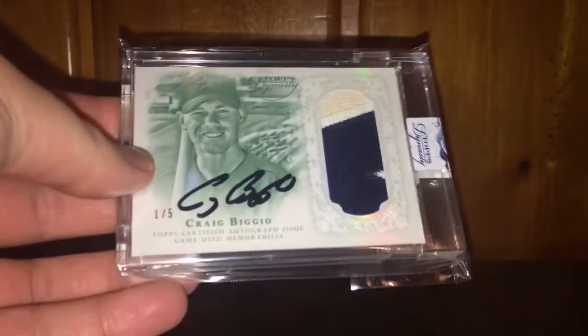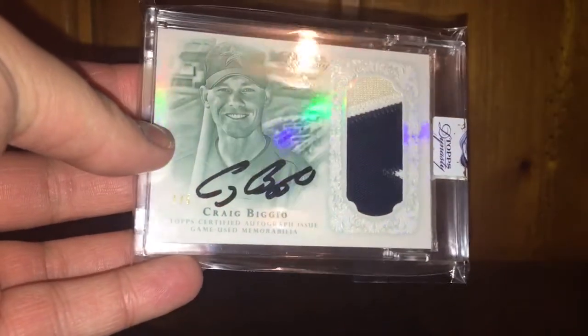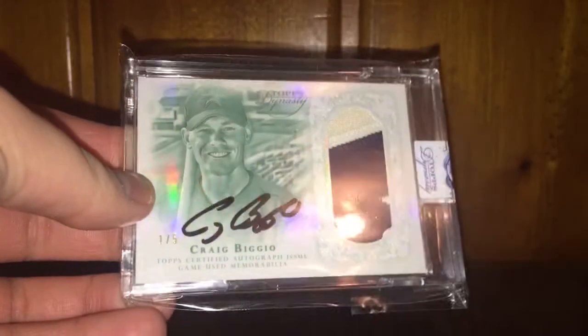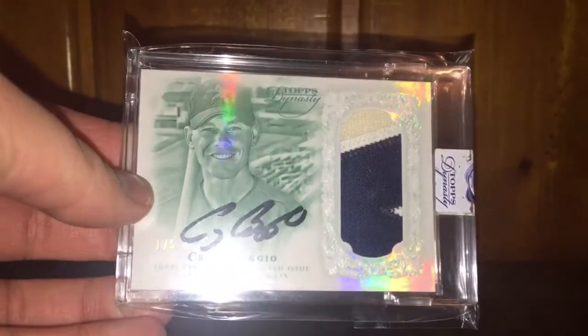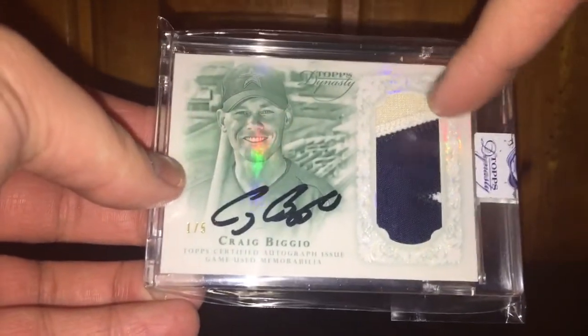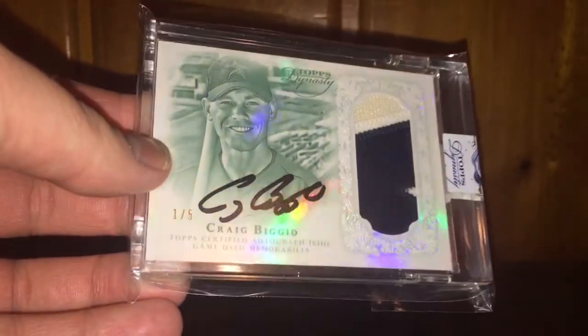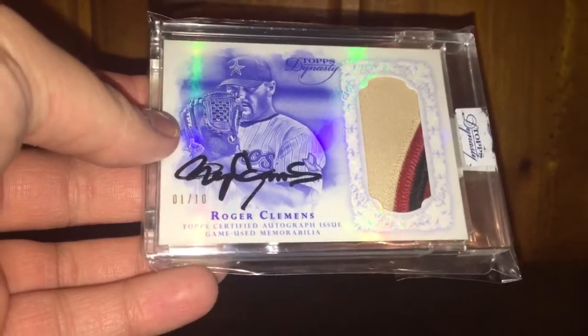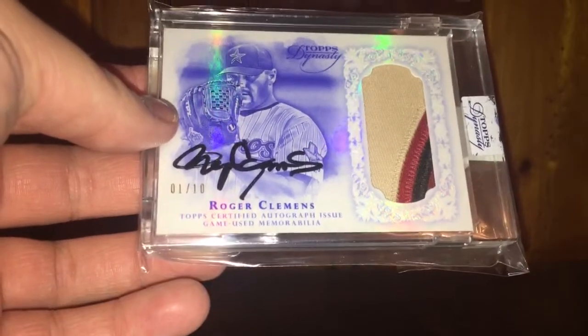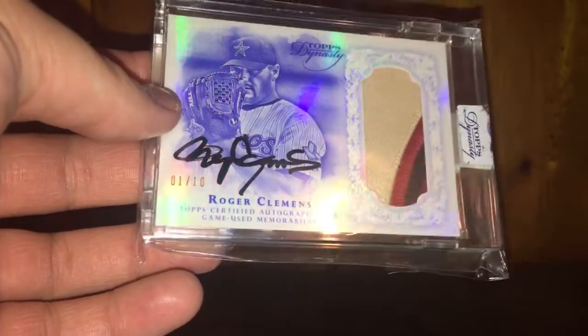Now on to some dynasty. As I said before, I like Craig Biggio. This is out of 2015 Topps Dynasty, the green version I guess, numbered one out of five, nice three-color patch. Can't really tell, but it's like beige-ish white, then white, and then navy. Another dynasty, the Rocket, Roger Clemens. Always wanted an autograph of him in an Astros uni. This one's got a pretty nice patch on it, numbered one out of 10.